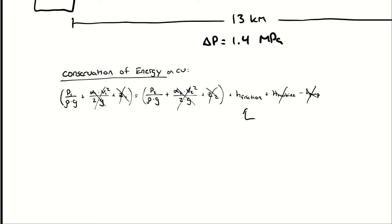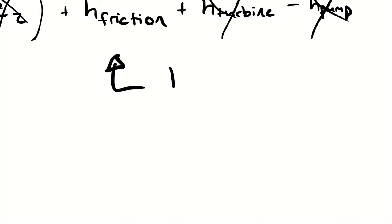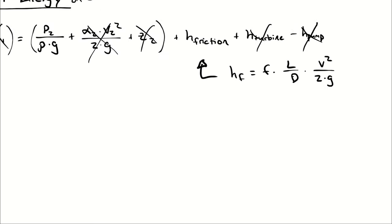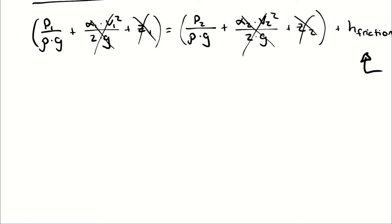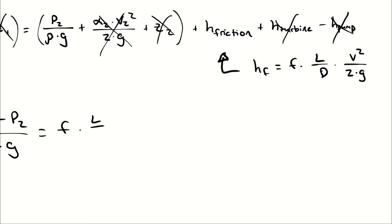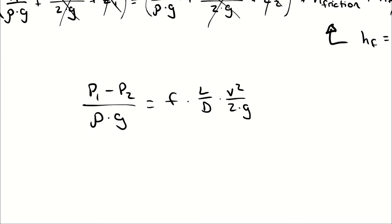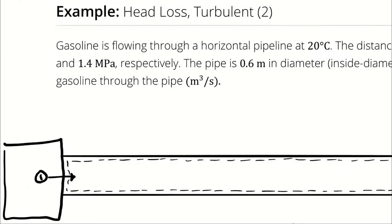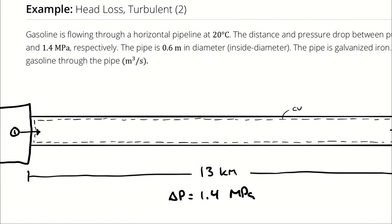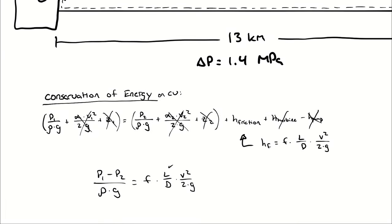Plugging in the definition of friction head. Using only major losses, it equals F times L over D times V squared over 2g. The conservation of energy equation simplifies to: (P1 − P2) / (ρg) = F × (L/D) × V²/(2g). We know the length and diameter; the goal is to calculate volumetric flow rate, so we could solve for velocity and then convert.